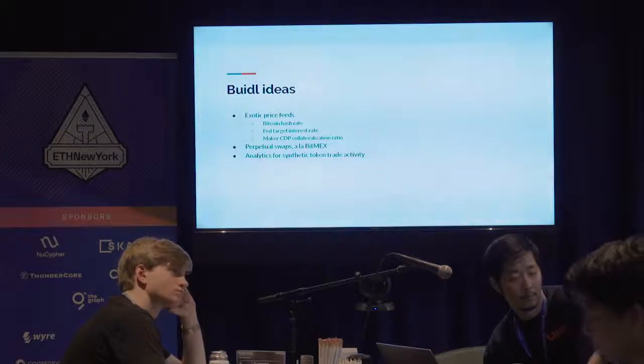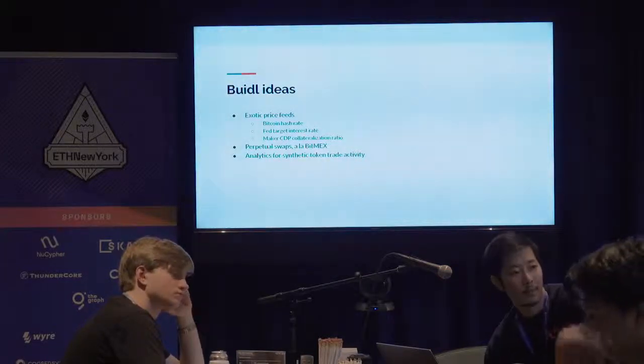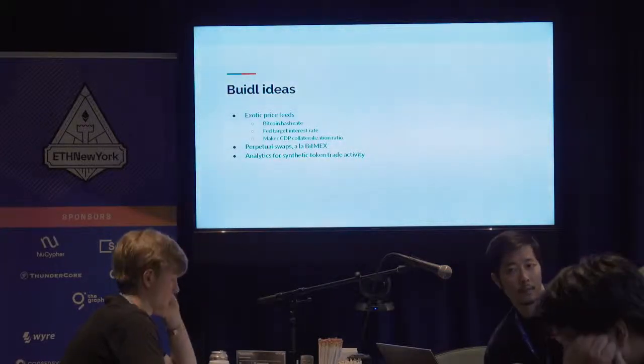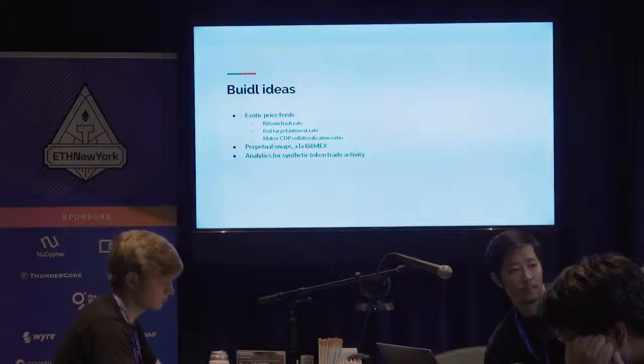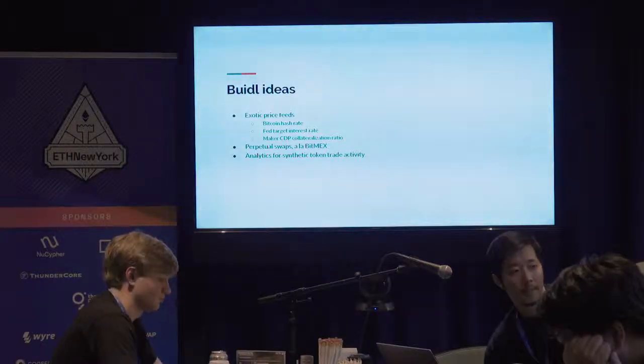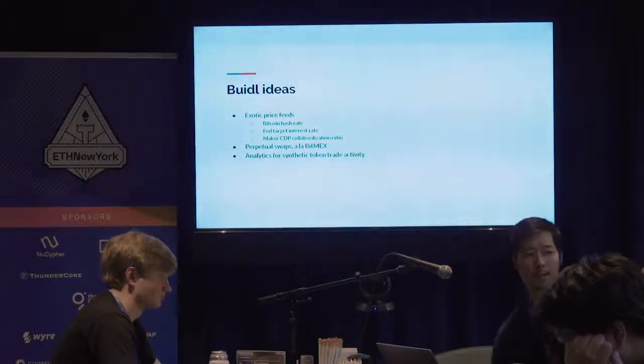A tokenized Bitcoin perpetual swap would sort of be an ERC-20 that's Bitcoin-ish. That's definitely something on our roadmap that we're interested in pursuing.